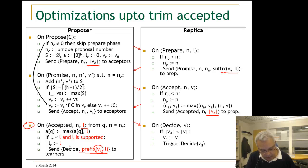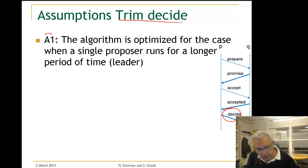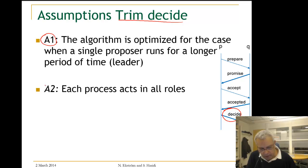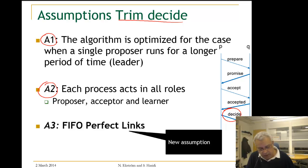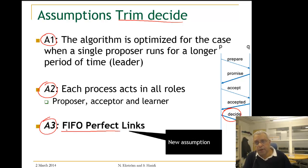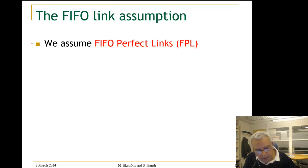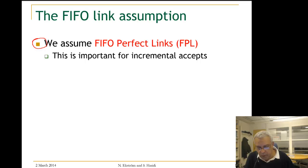Now let us trim the decide message. We will add another assumption: that proposers have FIFO links to the acceptors — specifically, FIFO perfect links. This means that as long as the sender and receiver are correct, messages will be received by the receiver in the order they were sent. This FIFO perfect link assumption is important for incremental accepts.